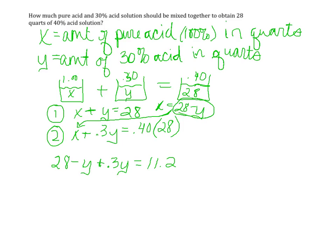Combining like terms, I have negative 0.7 or 70% y. Subtracting 28 on both sides leaves me with negative 16.8, and now dividing by negative 0.7 on both sides, I find out that y equals 24.